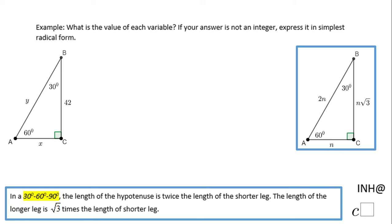Welcome back at Inahel at C-Square. In this example, we have to find the value of each variable x and y in this triangle. If you notice, this triangle has this angle 30, this angle at C is 60, and obviously this one is 90. This is what we call a special right triangle, 30-60-90.